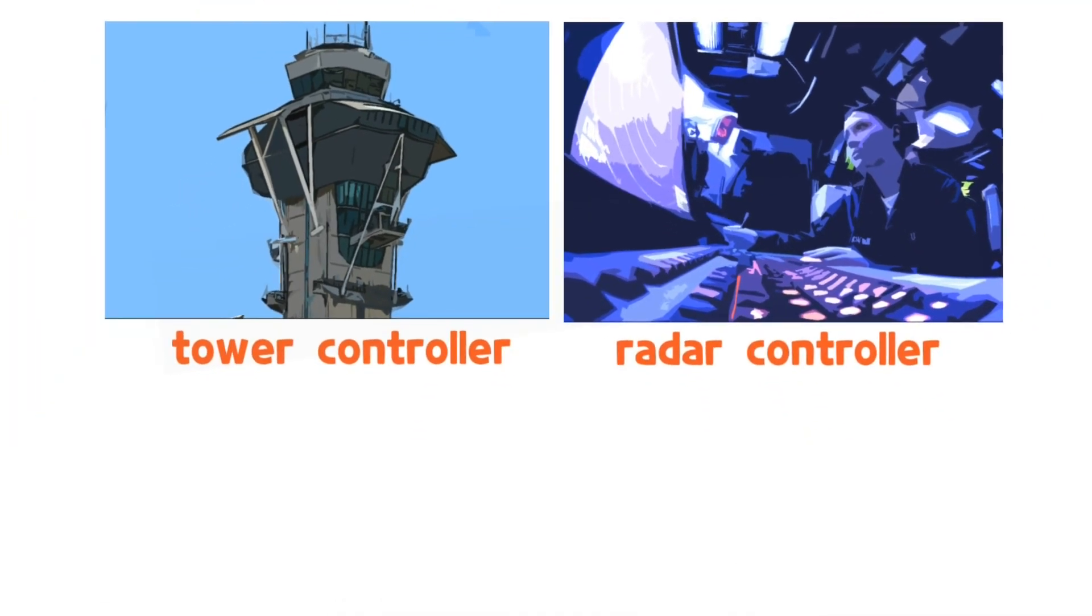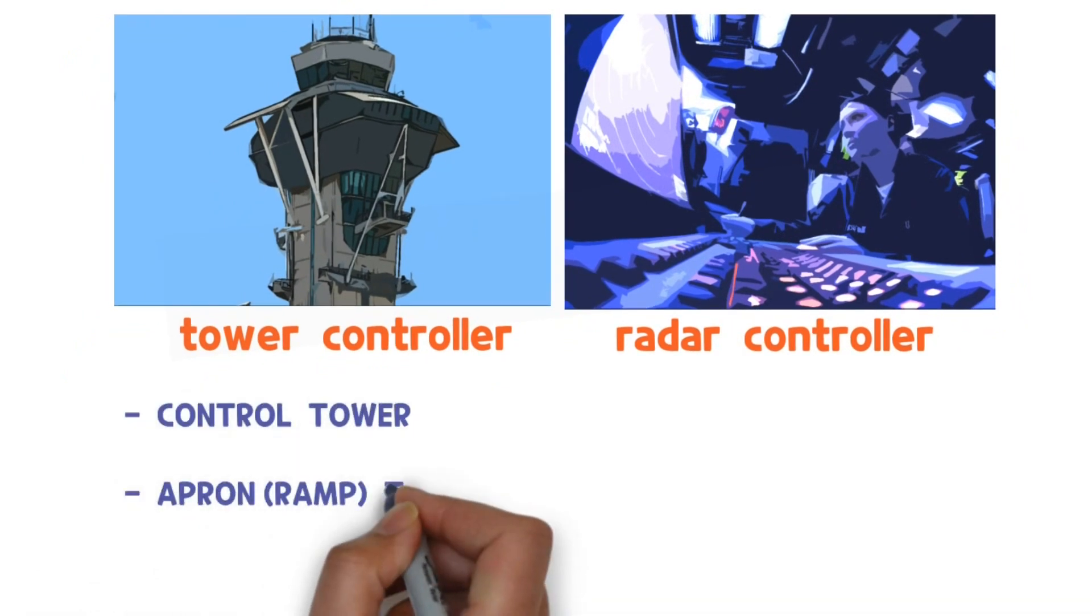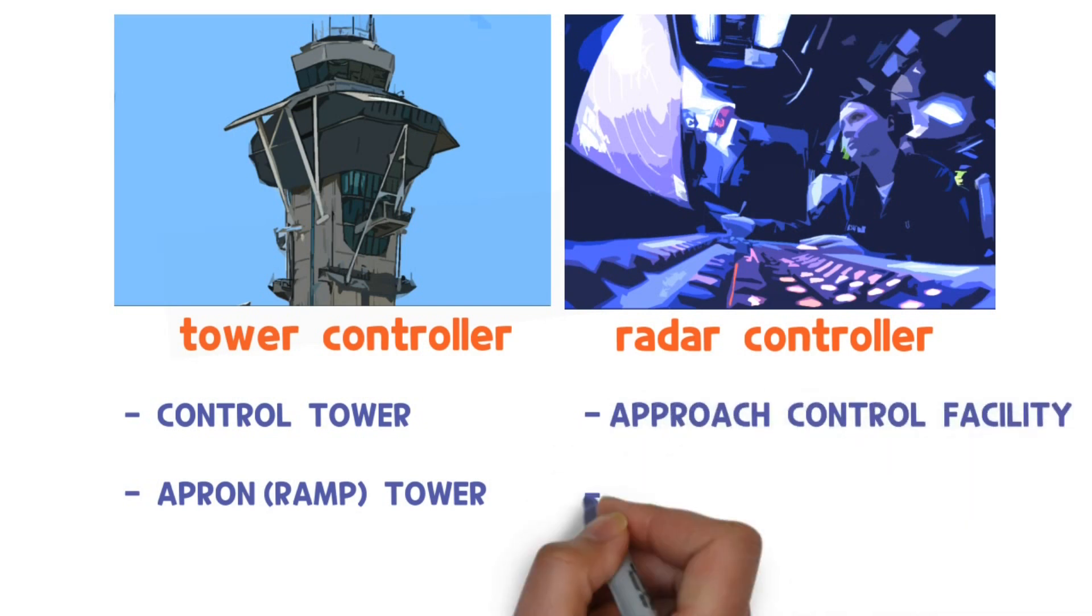Tower controllers work at a control tower and ramp control of the airport. Radar controllers work at radar approach facility or area control center.